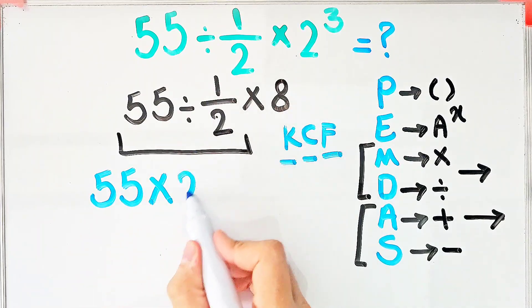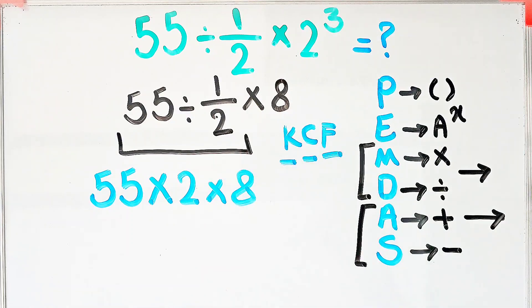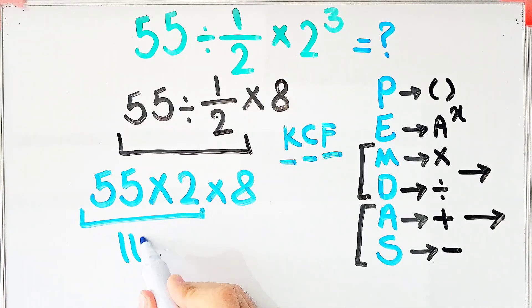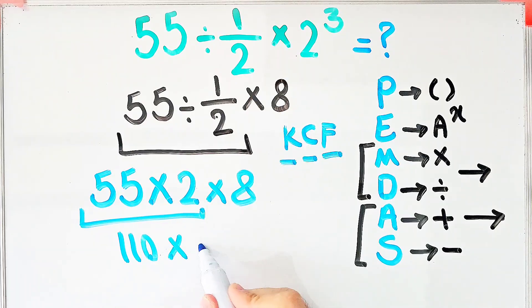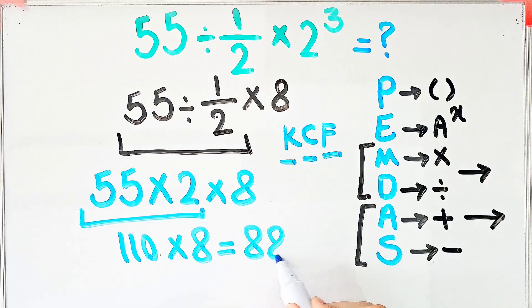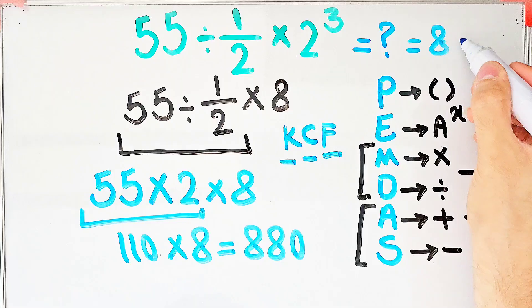Now we have a new expression: 55 times 2 equals 110. 110 times 8 equals 880. Thanks for watching guys. Please subscribe to the channel and leave a comment. Goodbye.